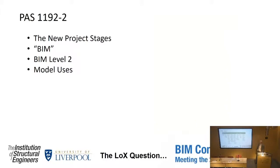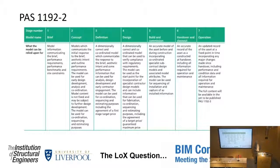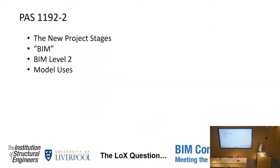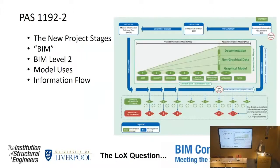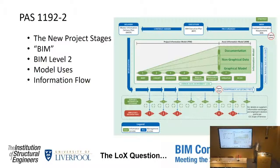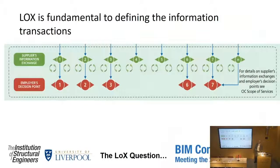PAS 1192 Part 2 also gave us this idea of model uses — what you could potentially use models for at different stages of the project. But the critical thing is the diagram showing information flow through the project, and particularly the information transactions layer, which is the thing that the client needs to make decisions to take the project forward. LOX is fundamental to defining the information transactions taking place between the client and the design team.